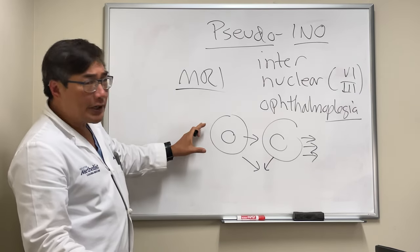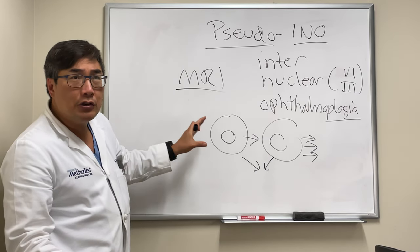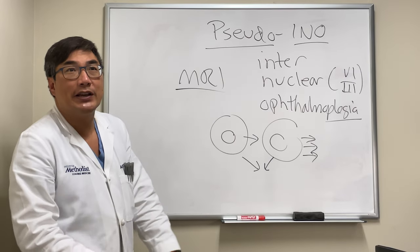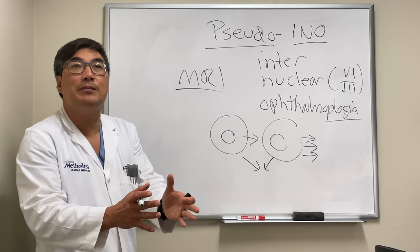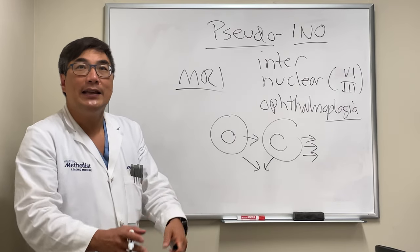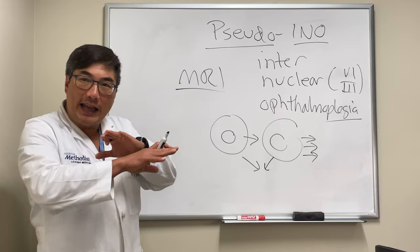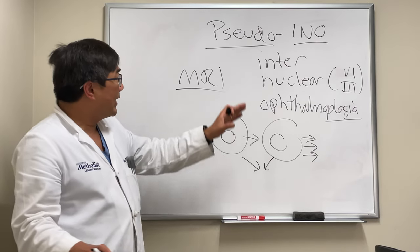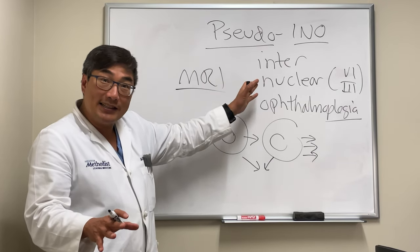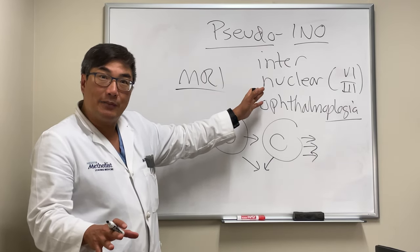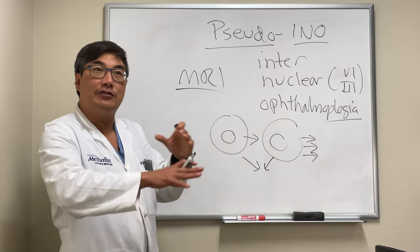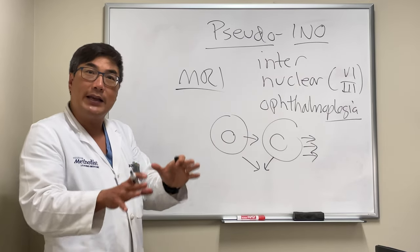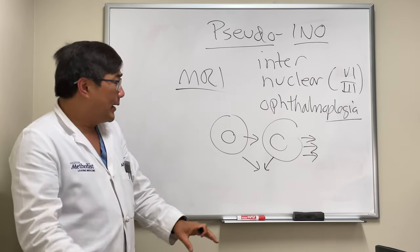The most common cause of pseudo-INO is myasthenia gravis. It can always be myasthenia — it can look like any pattern of ophthalmoplegia, including what looks exactly like an internuclear ophthalmoplegia, either unilateral or bilateral.